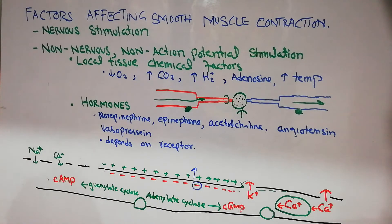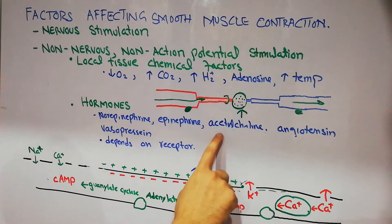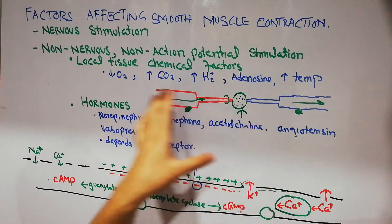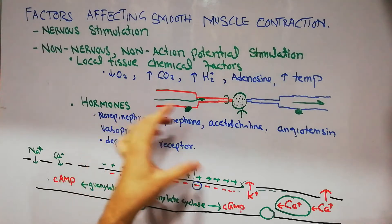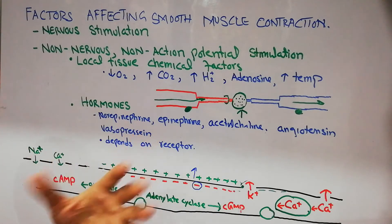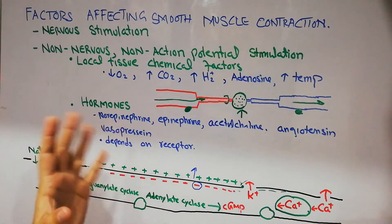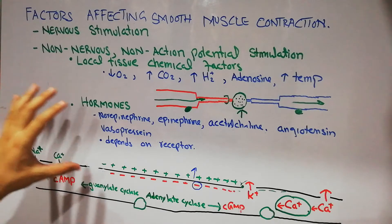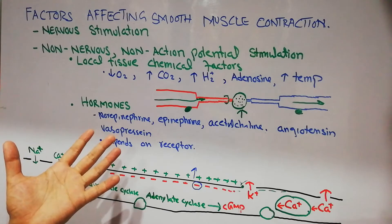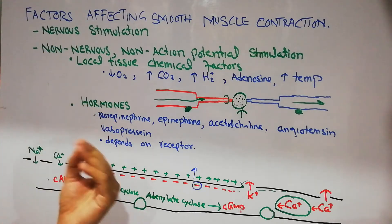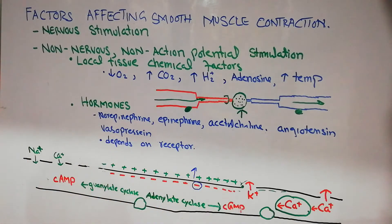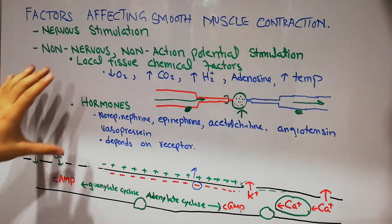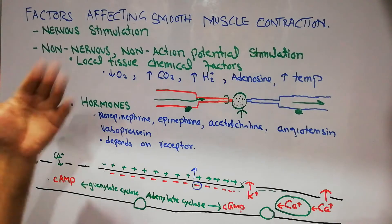The other non-nervous factor is hormones. Examples include norepinephrine, epinephrine, acetylcholine, angiotensin, and vasopressin. They can cause contraction but can go anywhere, not specifically to arterioles or venules, because they act on smooth muscles present in the intestines, ureter, bladder, and many viscera. Not all smooth muscles at every location are affected by every factor — those in the stomach respond to different factors than those in blood vessels.